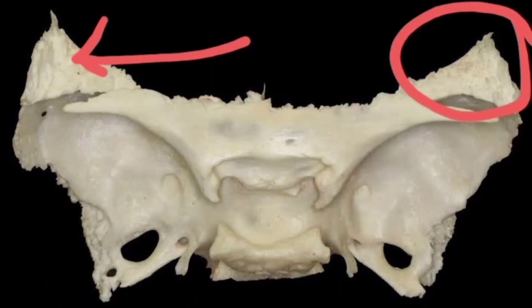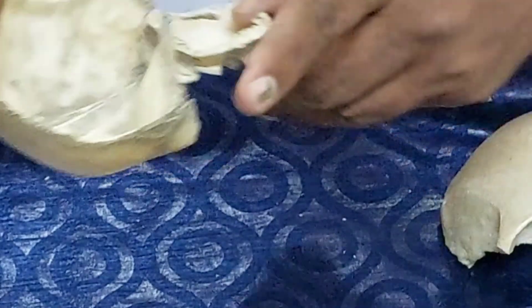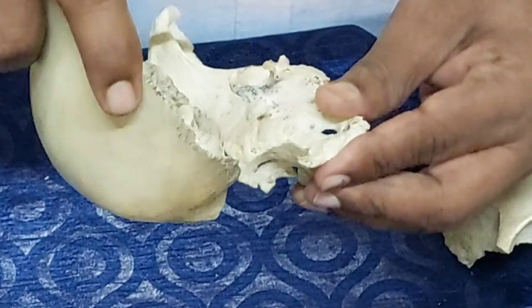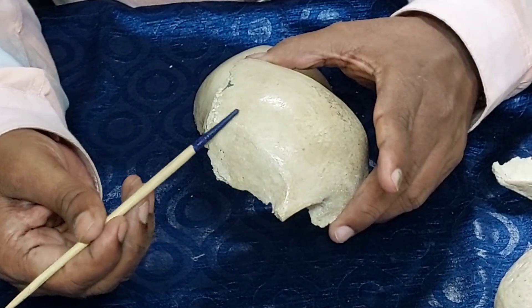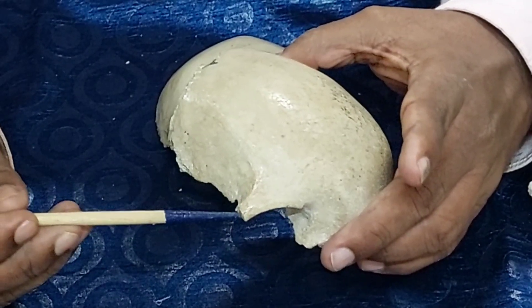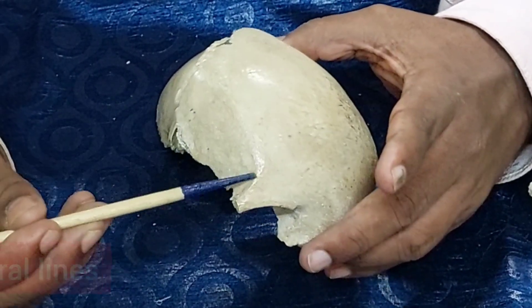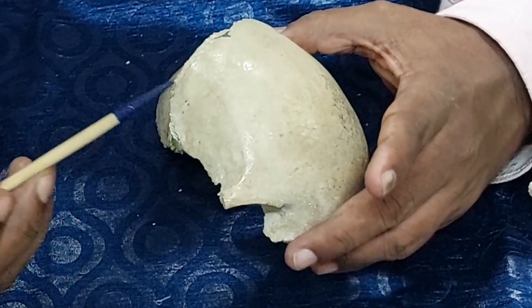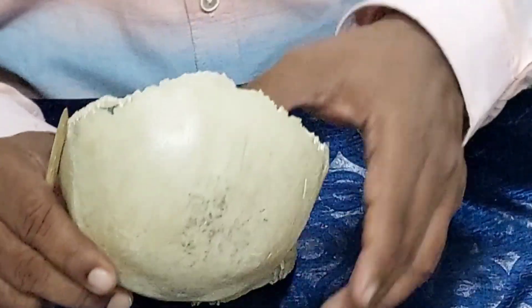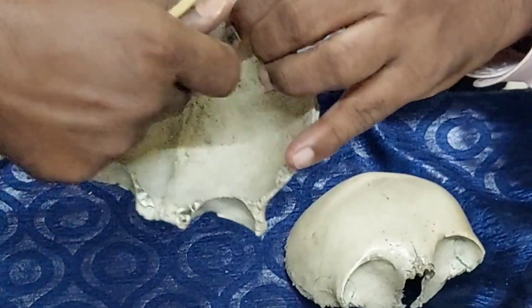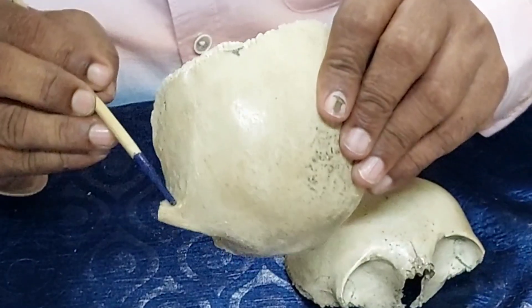There is a line going backwards and upwards from the zygomatic process called the temporal line — there are two: superior and inferior temporal lines. This is the temporal surface. Altogether, the squamous part has three surfaces: the external surface, the internal surface, and the temporal surface. In the temporal fossa, you find the temporalis muscle on both sides.